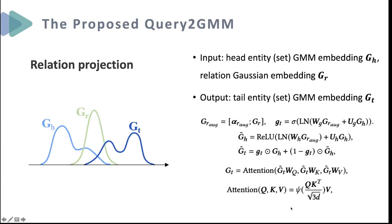Based on the proposed GMM embedding backbone, we introduce how to model the first-order logic operators in a unified framework. For the relation projection operator, given the head entity state and the relation as input, we first employ a distributed gate to control the different adjustment directions and magnitudes of different subsets of the head entity state based on the input relation. After that, we use a self-attention network to fine-tune the subsets of the generated final tail entity state based on current relative position, cardinality, and dispersion degree.